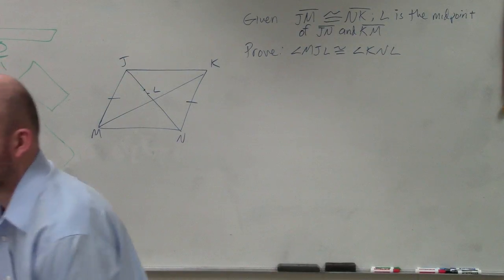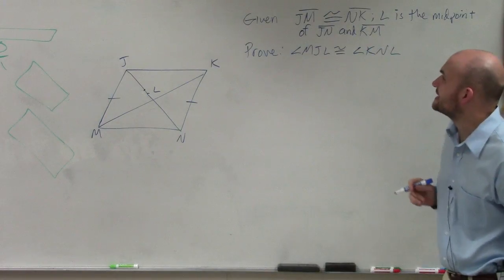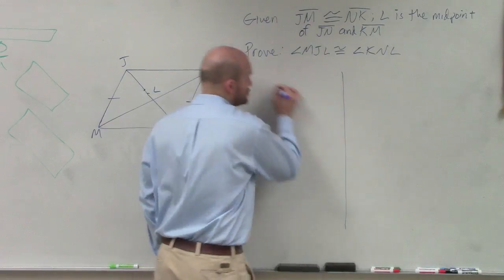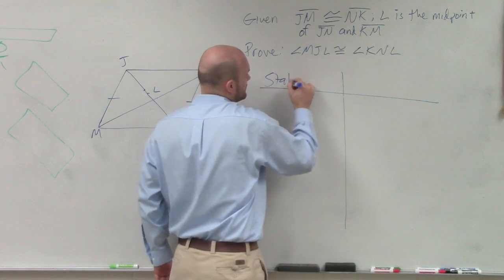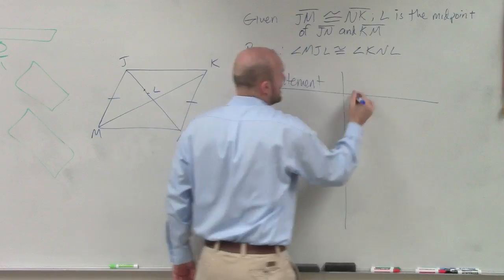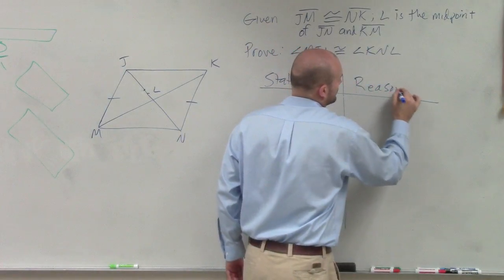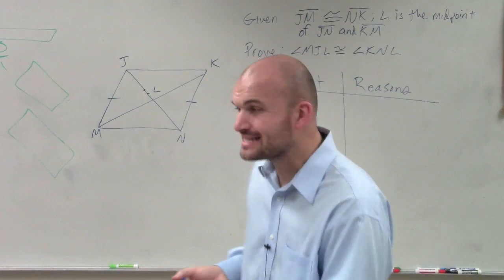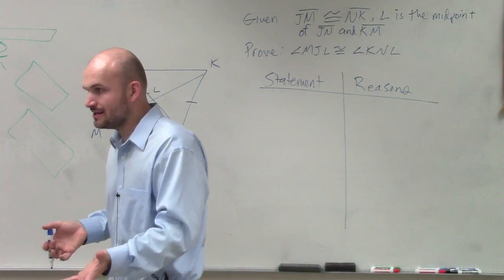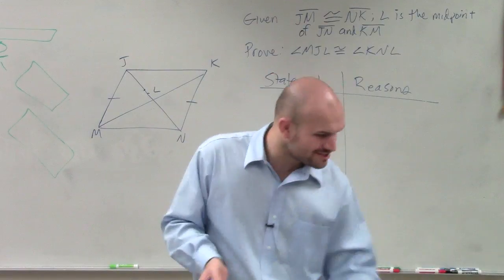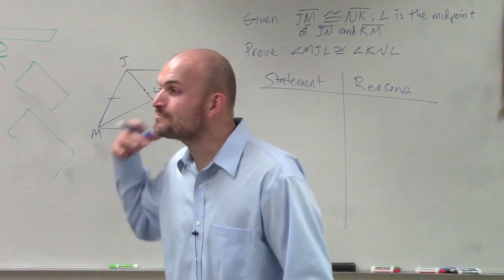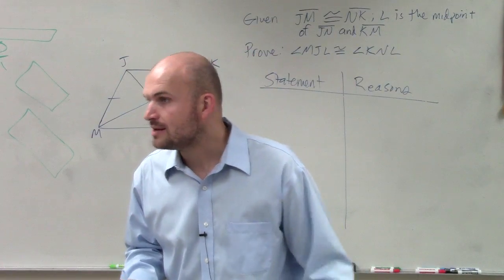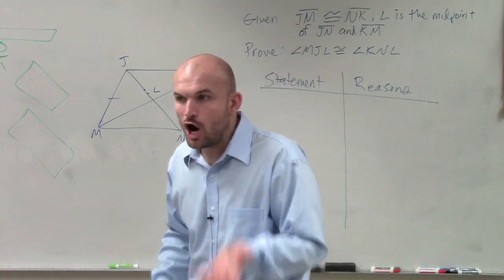So in this example, what I'm doing is they say that given — so remember, when we're doing a proof, we're going to use a two-column proof. We're always going to have statements and reasons. Our statements are going to be all of our facts — everything that makes up our arguments that we know we can say is true. So therefore, our conclusion of why things are true is going to be true. But we need to build up all of these facts.